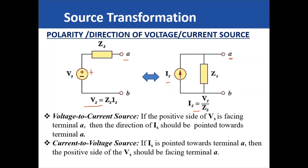Likewise, or conversely, if we try to do the reverse — that is, converting this current source into a voltage source — if the current is directed towards terminal A, we need to write the voltage on the transformed circuit such that the positive polarity or positive terminal is directed towards terminal A.